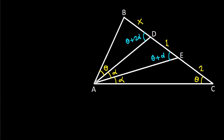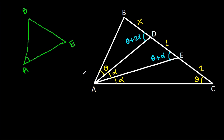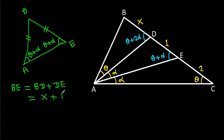In triangle ABE — vertices A, B, E — this angle is theta minus alpha and this angle is also theta minus alpha. So AB will be equal to BE. And BE is equal to BD minus DE, which equals X minus 1. So BE is X minus 1, and therefore AB is also X minus 1.